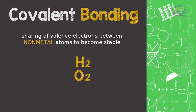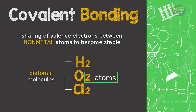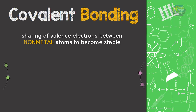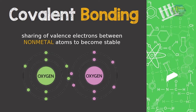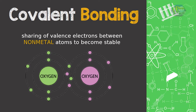Hydrogen, oxygen, chlorine, and many others exist as diatomic molecules, which means that there are two atoms of hydrogen, oxygen, and chlorine for them to exist. The oxygen atom is covalently bonded with another oxygen atom, the same with other diatomic molecules.